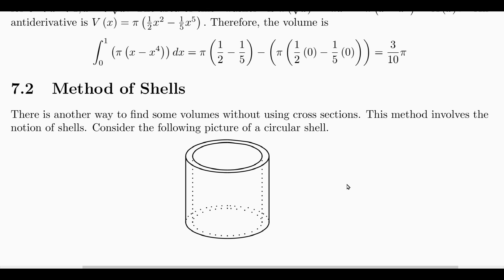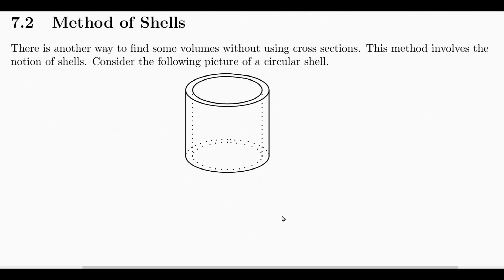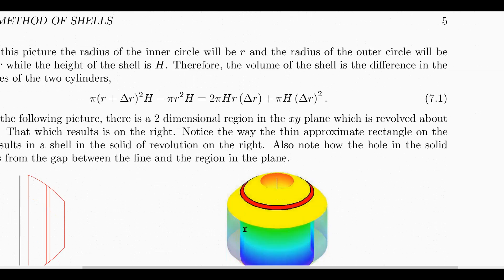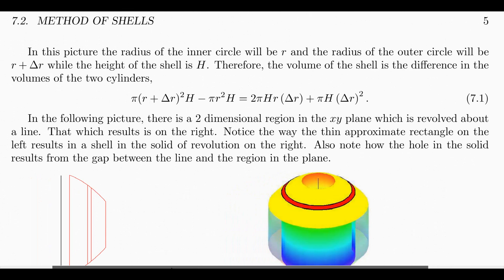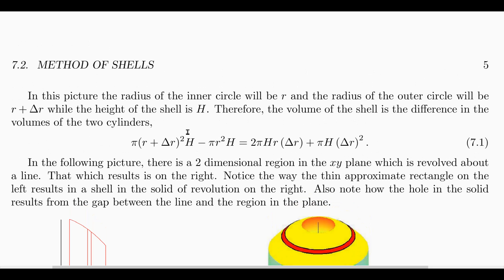Now there's another method for finding volumes that's significantly different — that's the method of shells. A cylindrical shell is the material between two cylinders. When you take a shell you can approximate its volume. The exact volume of the shell is the outer cylinder minus the inner cylinder, and when you multiply that out you get the shell volume formula.